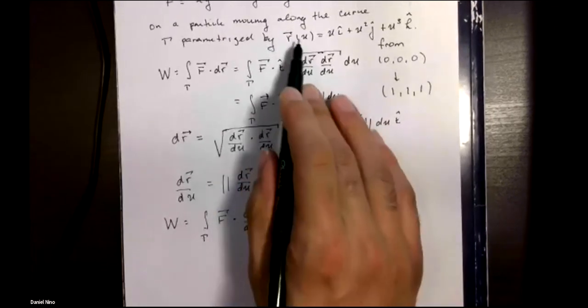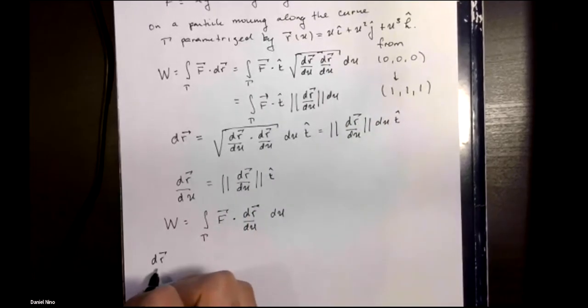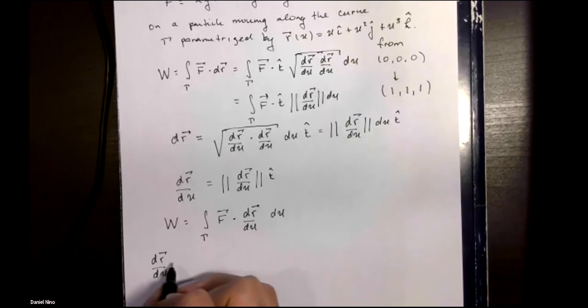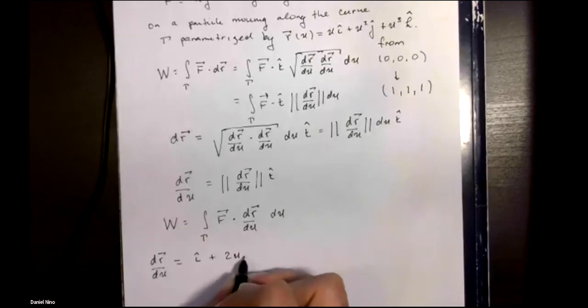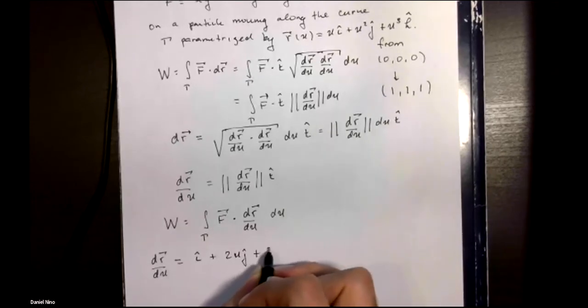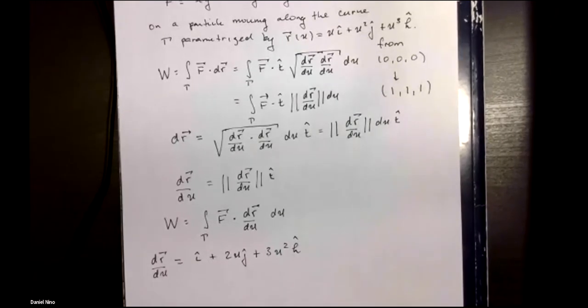Our parametric representation is given up here. We can find the derivative of that with respect to u, that is given by i hat plus 2u j hat plus 3u squared k hat.